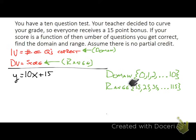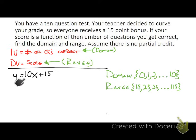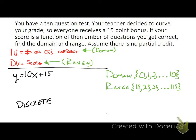The other way is to just read the problem and reason through it: the 15-point bonus means the minimum grade is 15, and since every question adds 10 points, the maximum is 115. To summarize, here's your domain and range. We write them with commas because this is a discrete relationship — not continuous. The graph in this case would be a series of dots for each corresponding grade as a function of questions correct.